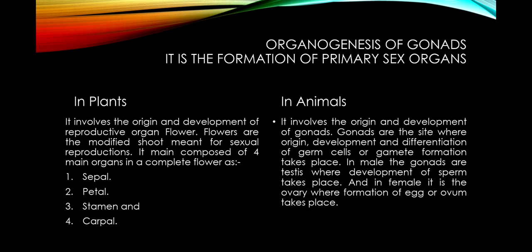The flower is a modified shoot meant for sexual reproduction, mainly composed of four organs: sepal, petal, stamen, and carpel. Sepal and petal are the accessory sex organs, while stamen and carpel are the principal sex organs — stamen is the male sex organ and carpel is the female sex organ. In case of animals, organogenesis involves the origin and development of the gonads, which are the sites where germ cells originate, develop, and differentiate. In males, the gonads are the testes where sperm development takes place, and in females it is the ovary where formation of the egg or ovum takes place.